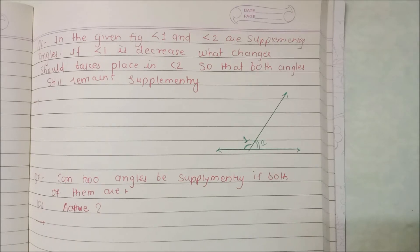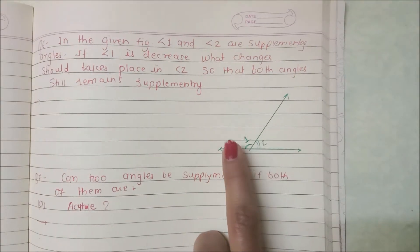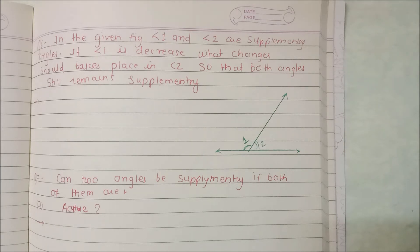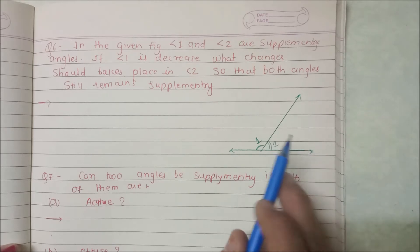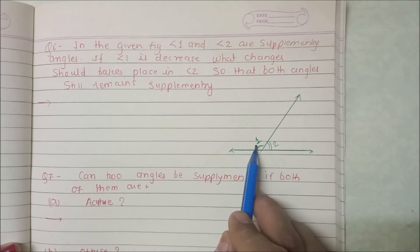Hello friends, welcome back to your own channel Beginners Point. We will see Class 7 Maths Exercise 5.1 Question 6. First, we will see what is given. The figure shows angle 1 and angle 2 are supplementary angles, which means these two angles sum to 180 degrees. If angle 1 is decreased, what change should take place in angle 2 so that both angles still remain supplementary?